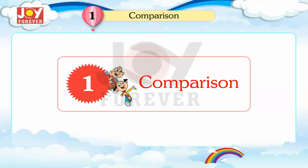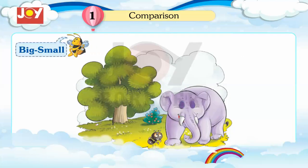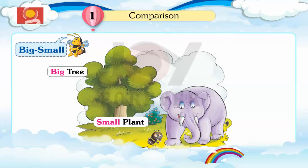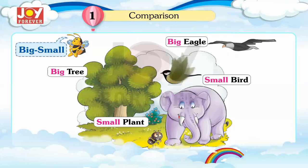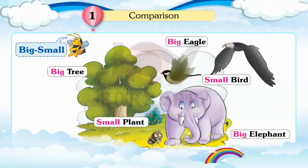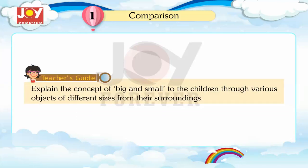Chapter 1: Comparison. Big, small. Big tree, small plant. Big eagle, small bird. Big elephant, small ant. Teacher's Guide: Explain the concept of big and small to the children through various objects of different sizes from their surroundings.